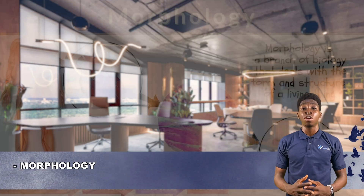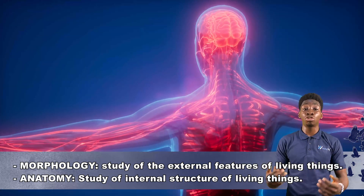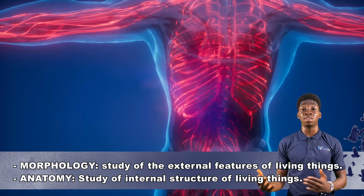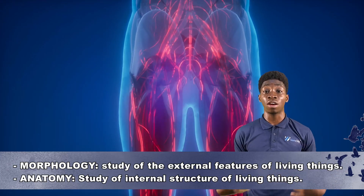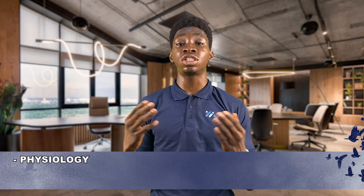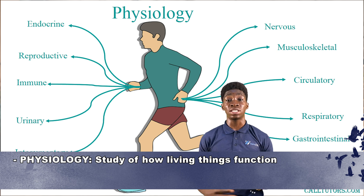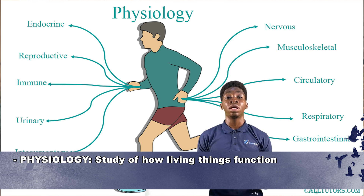Apart from these broad divisions, biology also has other subdivisions. We have morphology, which is the study of the external features of living things. We also have anatomy, which is the study of the internal structure of living things. Physiology is the study of how living things function — the function of each part of the body and the processes that make a living thing function.